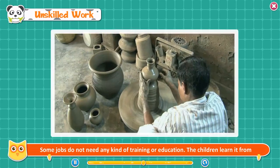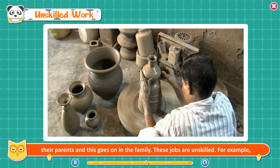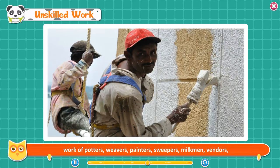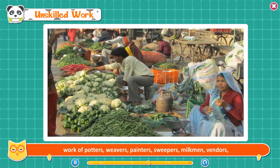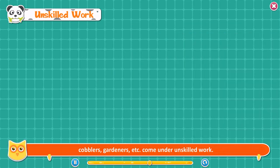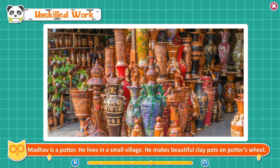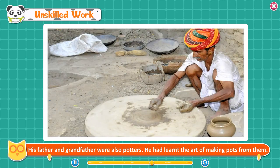Unskilled work. Some jobs do not need any kind of training or education. Children learn it from their parents and this goes on in the family. These jobs are unskilled — for example, work of potters, weavers, painters, sweepers, milkmen, vendors, cobblers, gardeners, etc. Madhav is a potter who lives in a small village and makes beautiful clay pots on a potter's wheel. His father and grandfather were also potters and he learned the art from them. Shyamal is a cobbler who mends and polishes shoes and also makes new shoes.